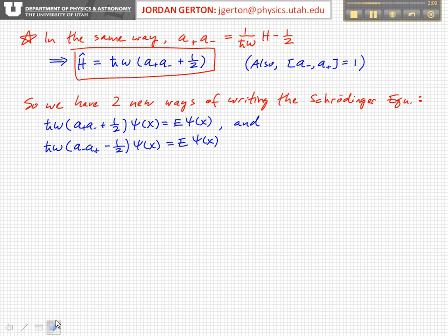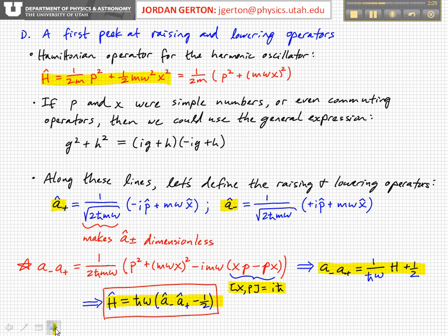And similarly, we didn't show this, but you can show this in the same exact way, that you can also write the Hamiltonian operator as h bar omega times a plus a minus, the raising operator, the lowering operator, plus a half. So here we have plus a half, here we have minus a half.